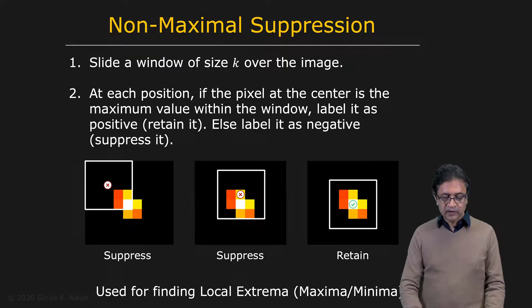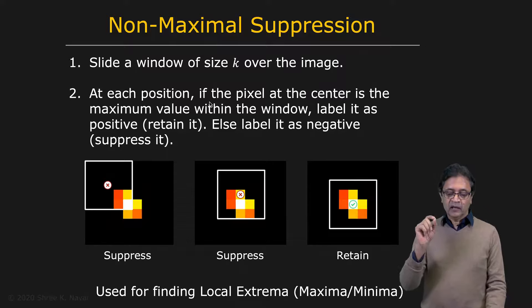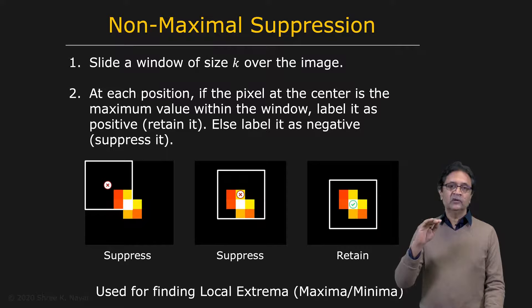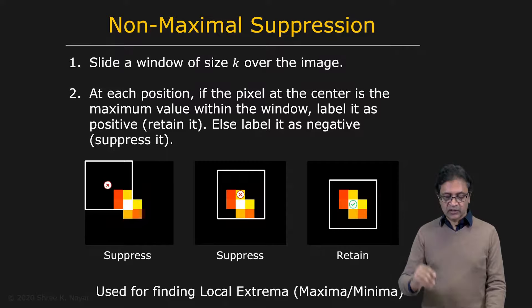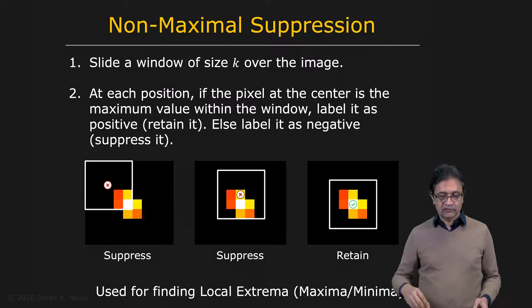Non-maximal suppression works by sliding a small window over the R image. At each position, if the pixel at the center is the maximum value within the window, you retain it. If some other pixel in the window has a larger value, you suppress or eliminate the center pixel. This way you can find all peaks with one scan of the image.